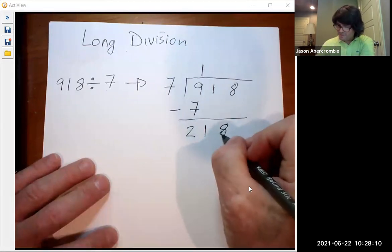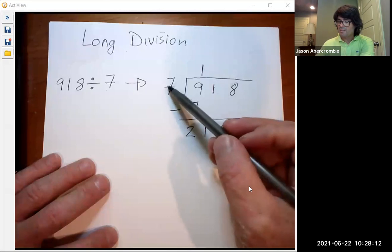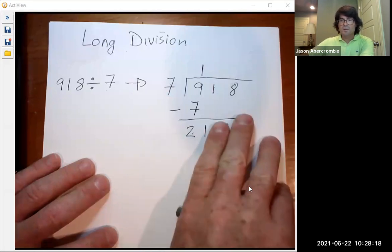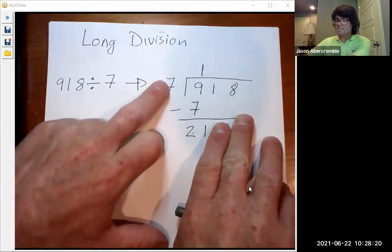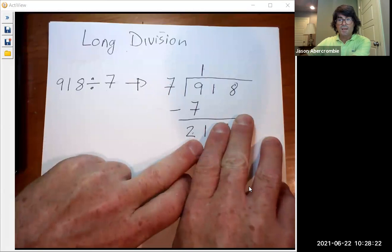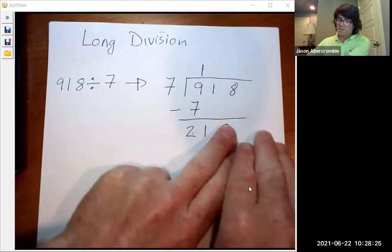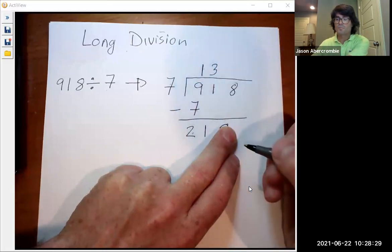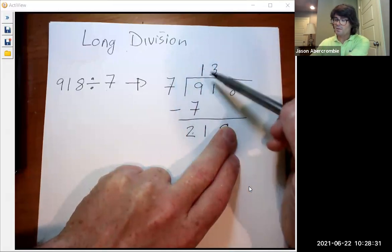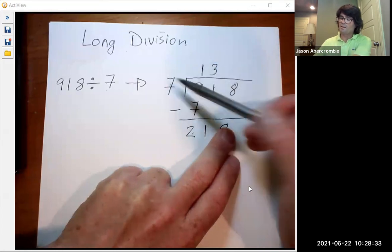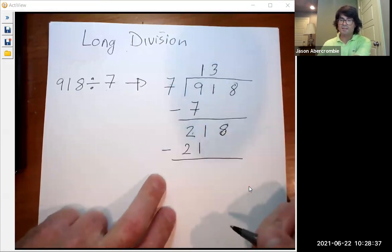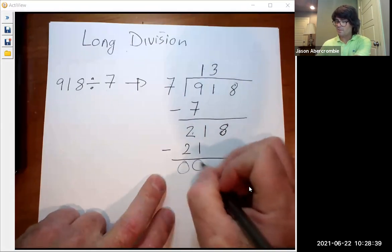Now you're going to ask another question. Does seven go into two? The answer is no. So then you look at the next digit, which is a one. Does seven go into 21? The answer is yes. It goes in three times. So we're going to put a three up here. And now we multiply three times seven and we get 21. Subtract and we get zero, and then this is eight.